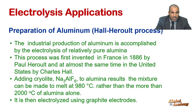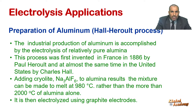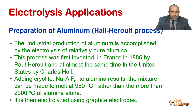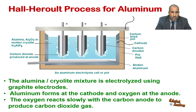The Hall-Héroult process involves electrolysis of a molten mixture of aluminium oxide (Al₂O₃) and cryolite (Na₃AlF₆) at about 1000 degrees centigrade in a cell with graphite electrodes. Electrolysis of pure aluminium oxide is impractical because it melts at 2045 degrees centigrade, and electrolysis of aqueous aluminium ion solution is not feasible because water is reduced in preference to aluminium ions. Thus, the use of cryolite as a solvent for aluminium oxide is the key to the success of the Hall-Héroult process.